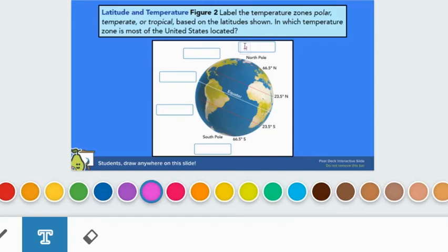The polar zones extend from about 66.5 degrees to 90 degrees north and 66.5 degrees to 90 degrees south latitudes.